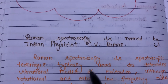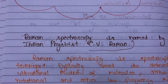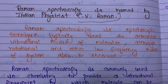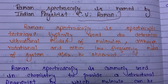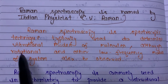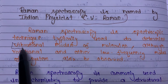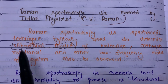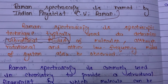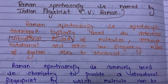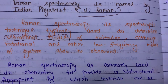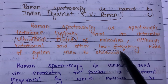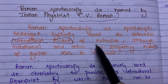Raman Spectroscopy was introduced by CV Raman. It is a spectroscopic technique typically used to determine the vibrational modes of molecules — that is the key highlighting point. All the rotational and other low-frequency modes of a system are also observed.